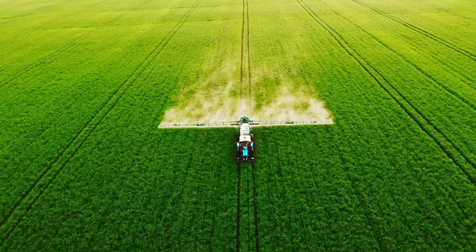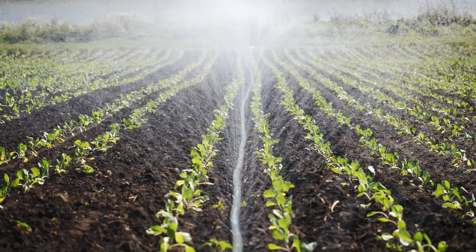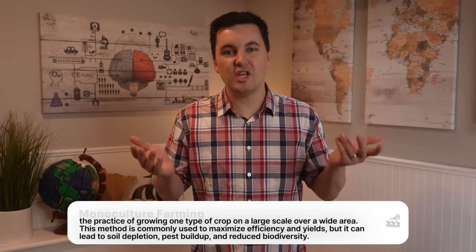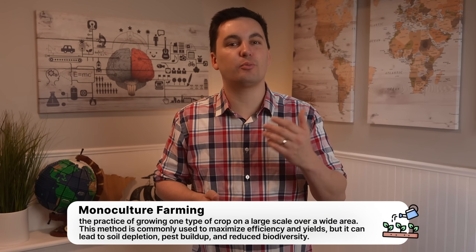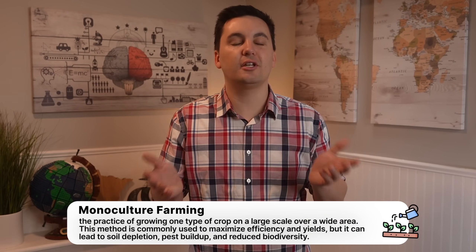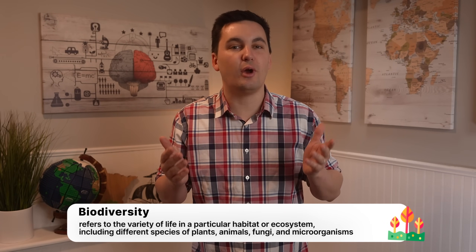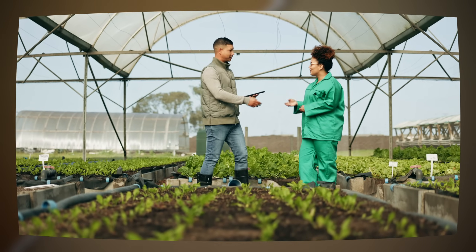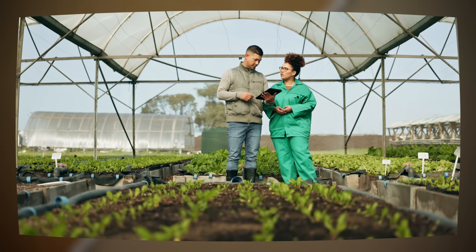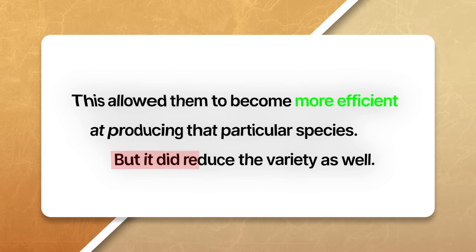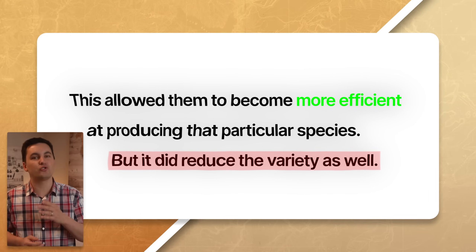As farmers started to use more and more chemical fertilizers, pesticides, and herbicides, we started to see more soil degradation and water contamination occur. At the same time, more and more farmers started practicing monoculture farming, which resulted in a loss of biodiversity. Remember, biodiversity refers to the variety of life forms in a given geographic area. Monoculture is when a farmer cultivates one type of crop, livestock, or fish species at a time. So instead of having a variety of species, farmers just focused on one, which allowed them to become more efficient at producing that particular species, but it did reduce variety and put more strain on the ecosystem.